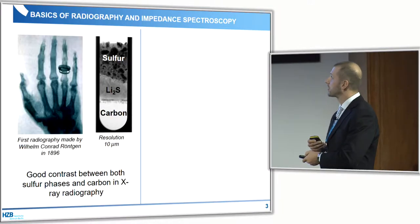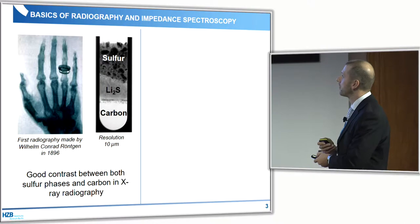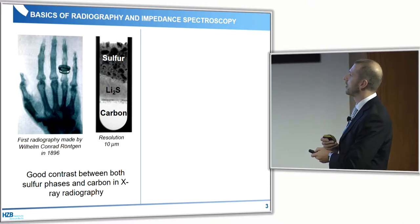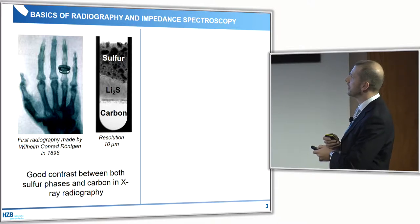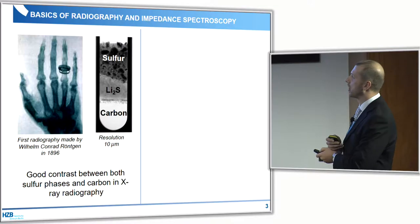Just some basics for radiography — some of you may have seen radiography made by Wilhelm Konrad Röntgen. What I want to show is a very nice contrast between carbon, sulfur, and Li2S. Because there is so much lithium in the Li2S phase, you have a much higher transmittance of the X-rays.